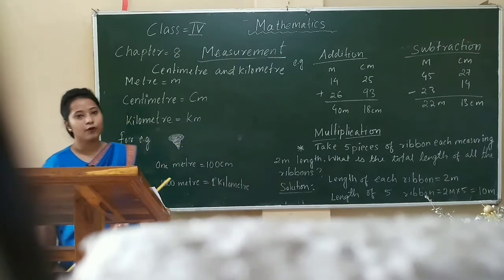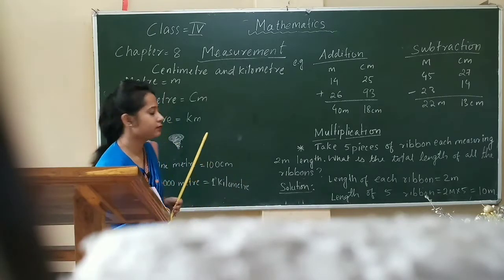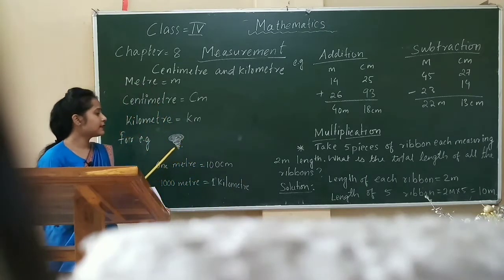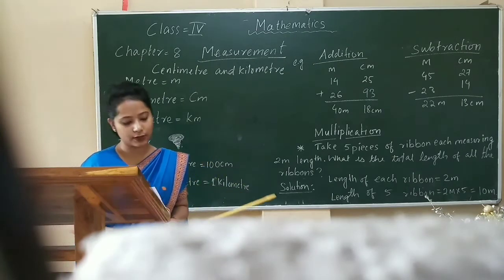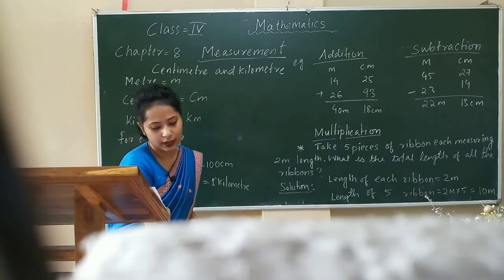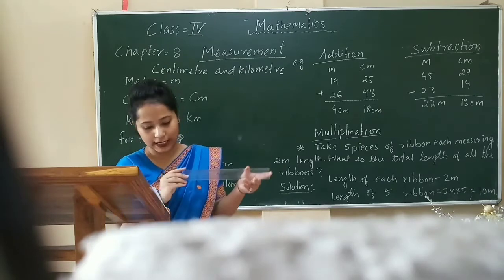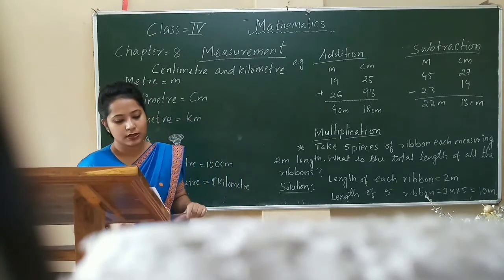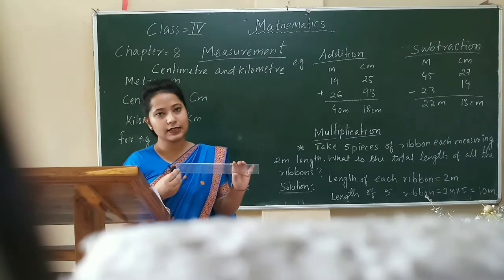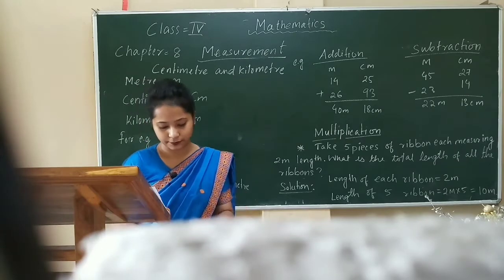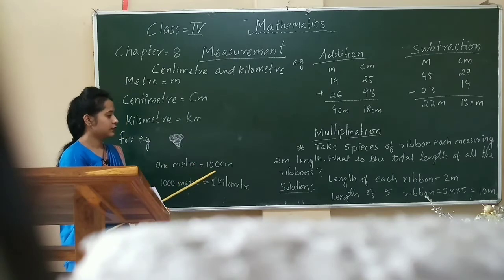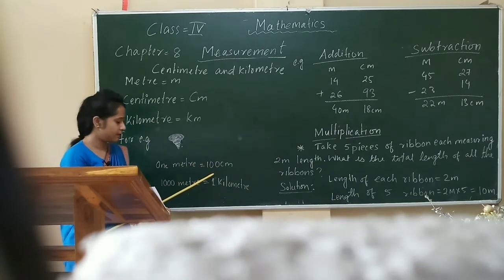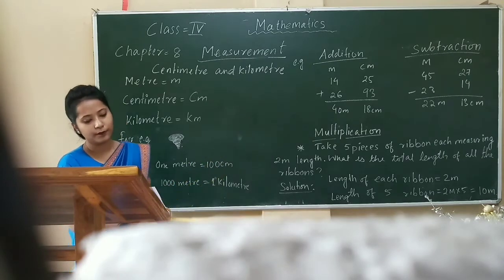For example, to measure a screw — that is, to find out the length of a screw — we use a scale. A scale is marked in centimeters. 1 meter is equal to 100 centimeters, and 1000 meters equal to 1 kilometer.